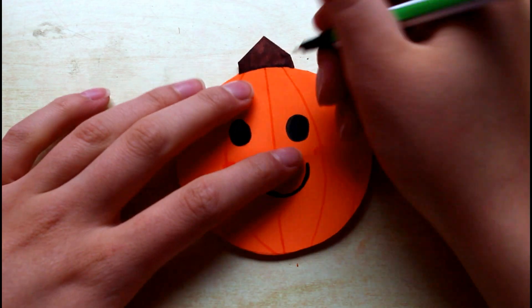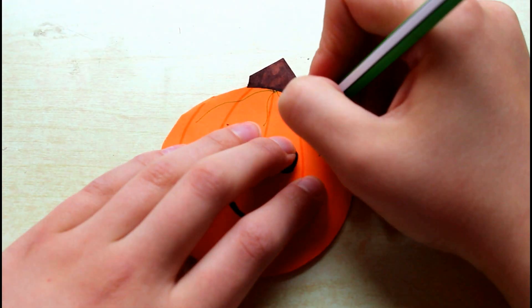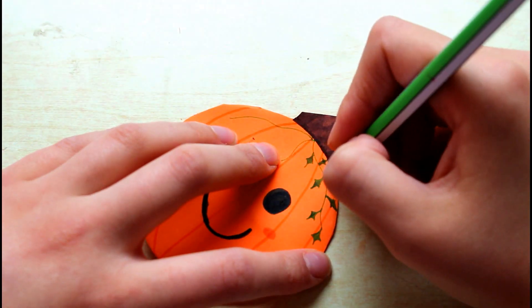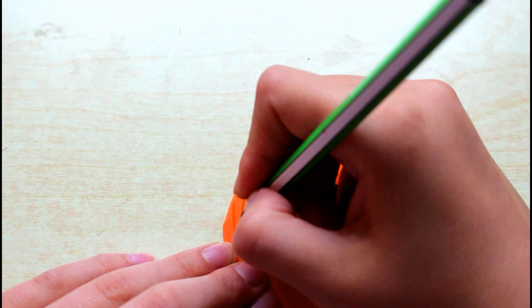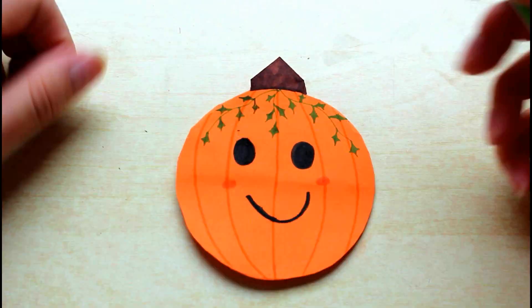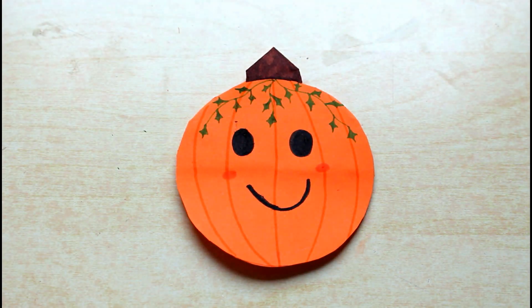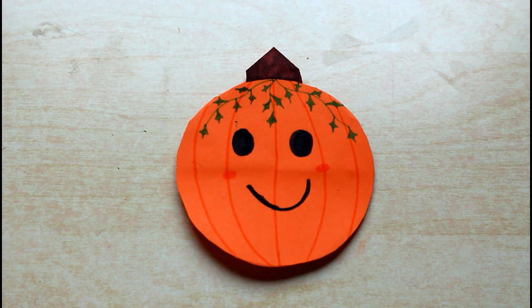Then the last thing I'm going to do is take my green fineliner pen and give this little pumpkin a nice little ivy tiara. I'm just drawing on some little vines and then drawing on some leaves. You don't have to do this if you don't want to, but I thought it was quite nice. I'm going to draw this all over the top. And then the little pumpkin is complete!